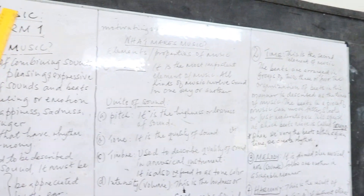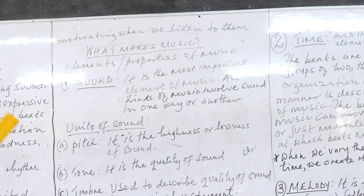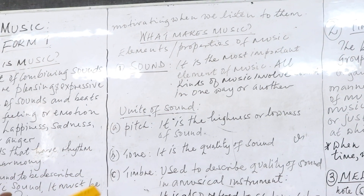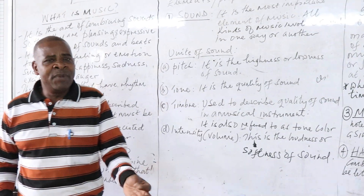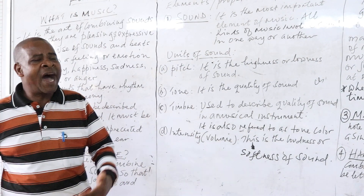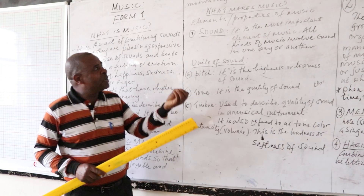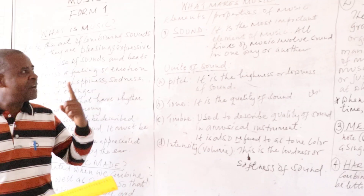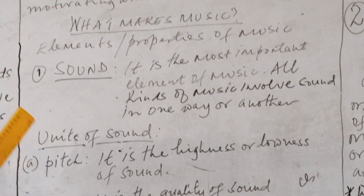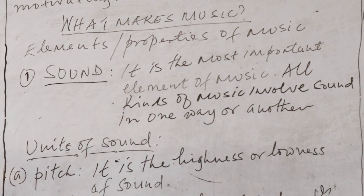Now I want us to look at the elements or properties of music — what makes music. I want to give an example like a house: for you to build a house, you need cement, you need stones, you need iron sheets, and then make a house. Music as well is made; we must have the elements that we use to make this music. The first element, actually the backbone of music, is sound. Sound becomes our first element and the most important element of music, whereby all kinds of music involve sound in one way or another.